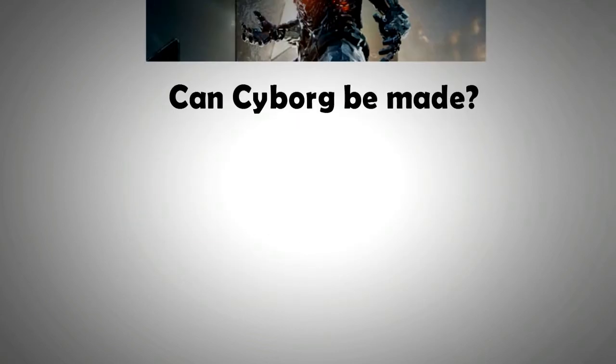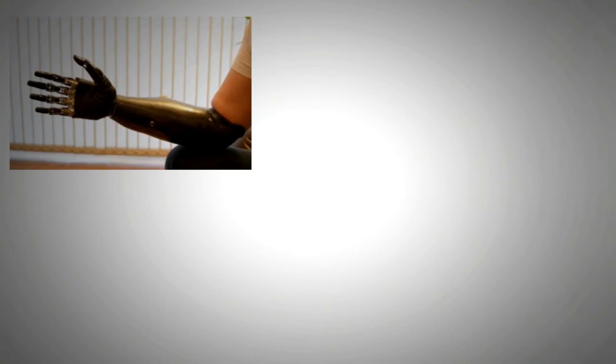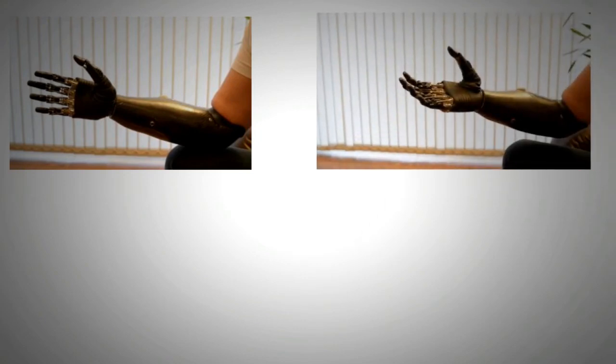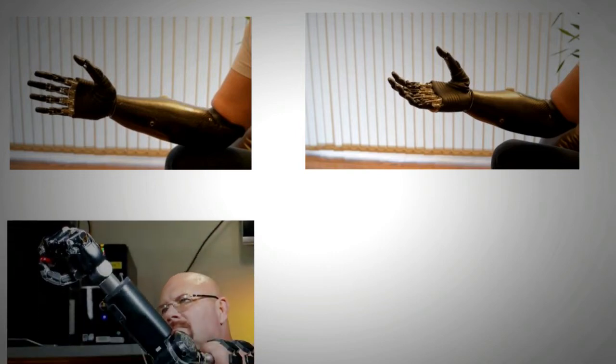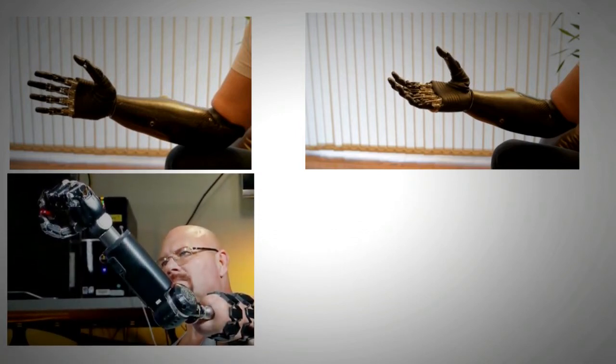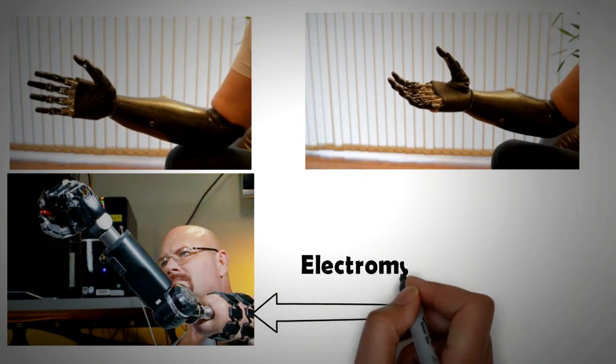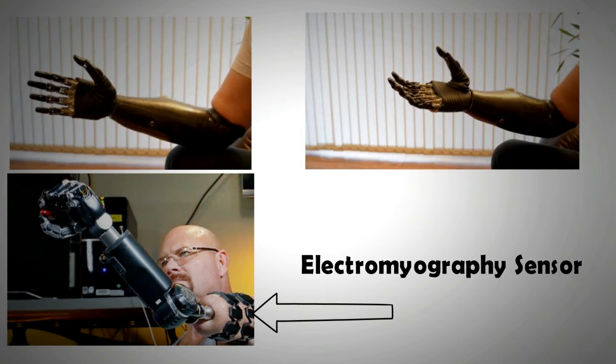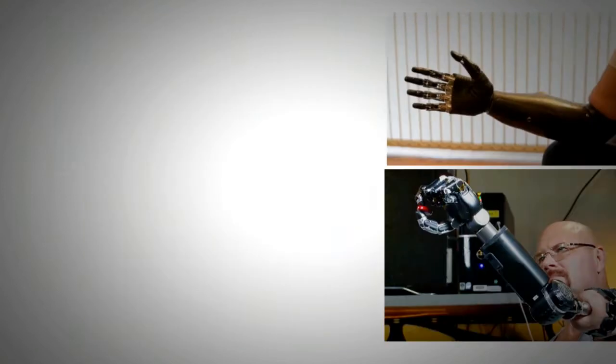We are all aware that advanced prosthetic limbs exist that can be controlled by the electrical signal sent by the brain through the nerves. The nerve endings can be connected to an interface called the electromyography sensor that picks up the electrical signals and sends it to a computer that turns it into motor input signal, and that in turn moves the arm. So we have already seen how the brain signals can be utilized to control machines.